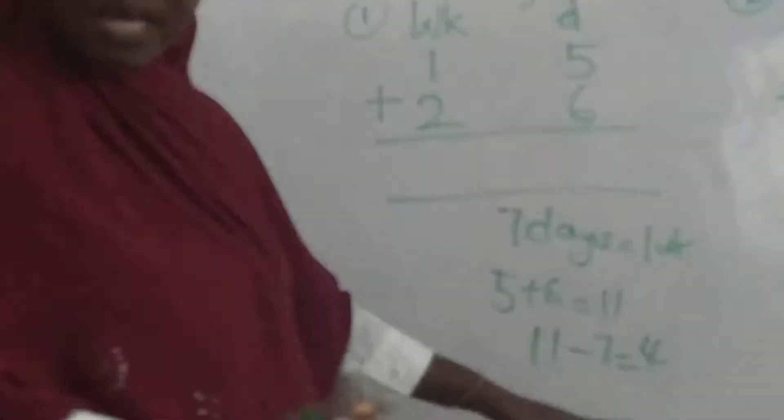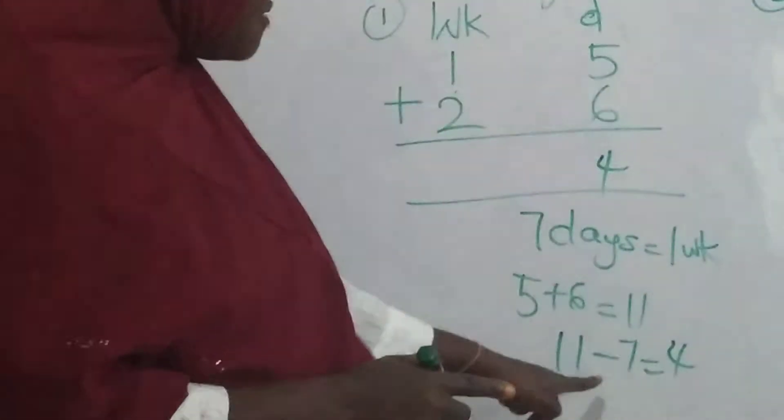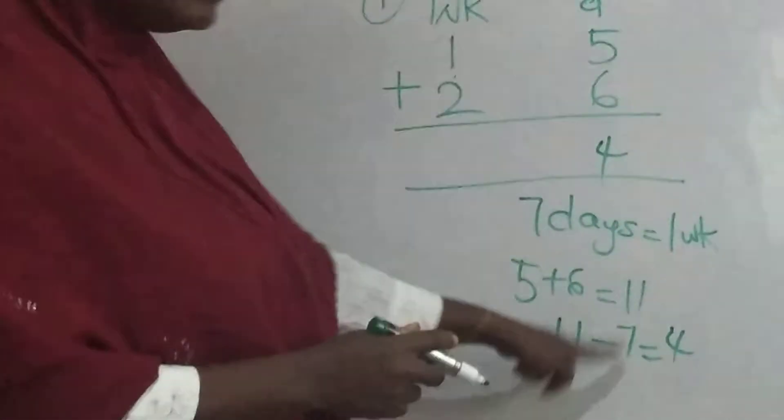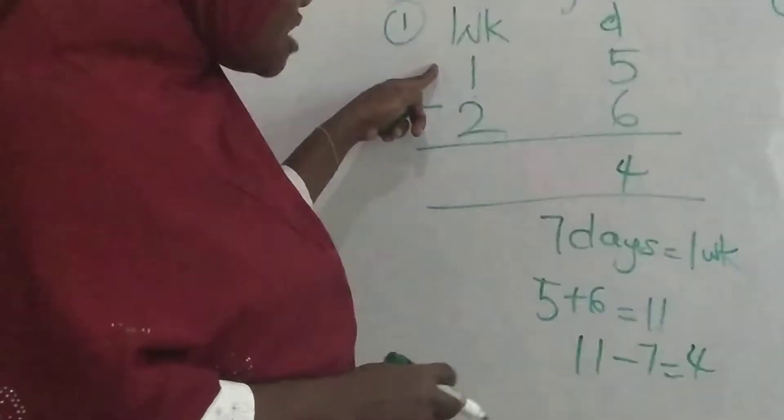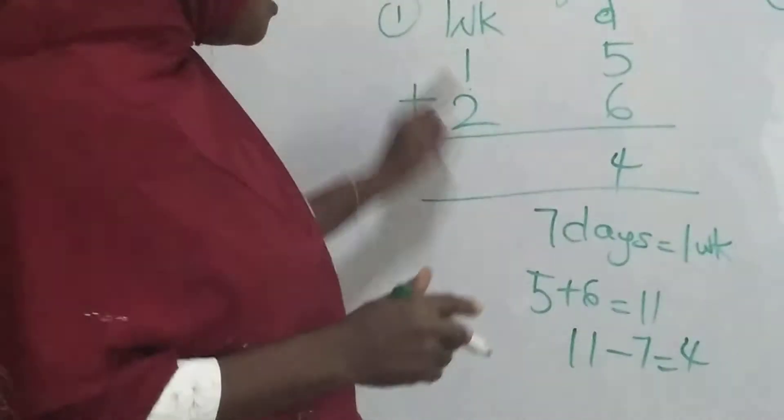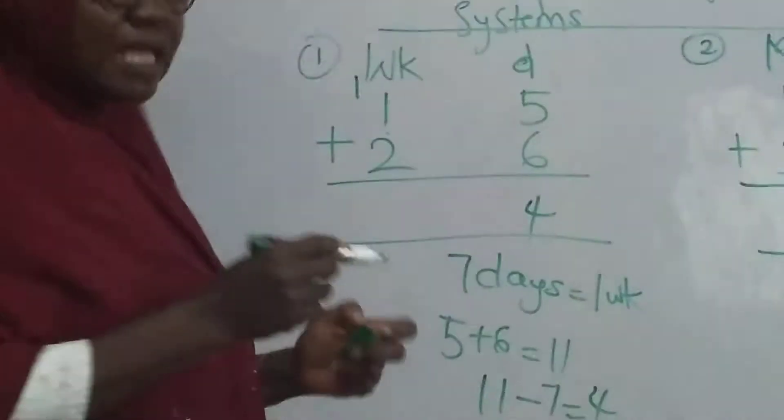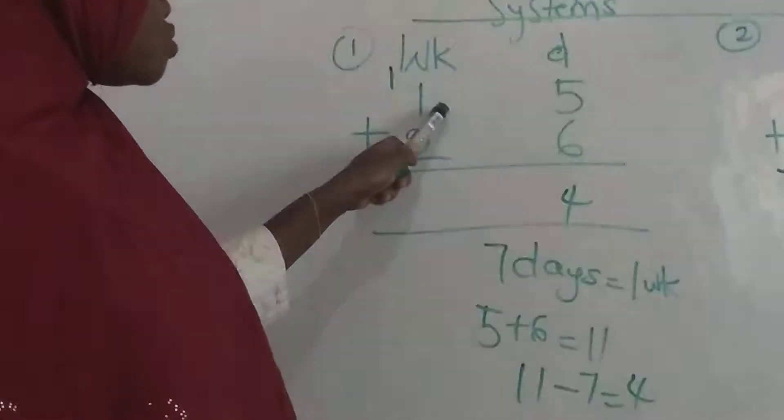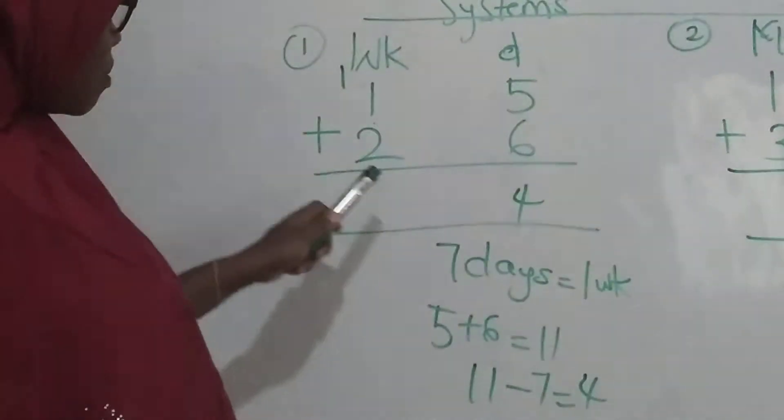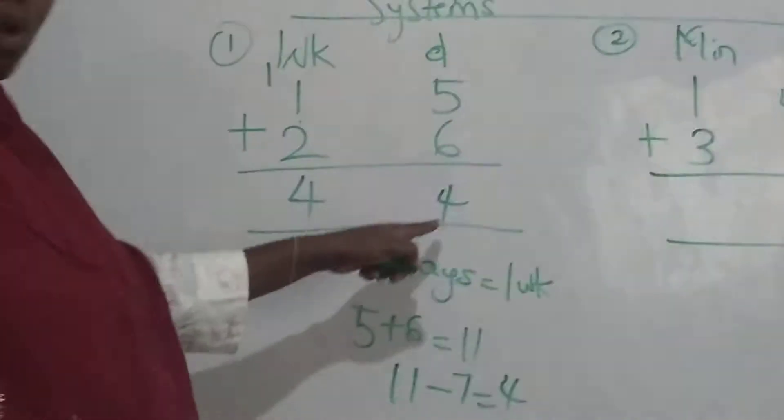Now if it gives me four, that four is what I'm going to write here. That is four days. Now this seven days that I take away here, I'm going to move it over to the week side. Why? Because seven days make one week. So I'll move this seven to this side to become one extra week. Now I'm going to add the number of weeks all together. I have one plus one, that is two. Two plus two, that is four. So all together I have four weeks and four days.